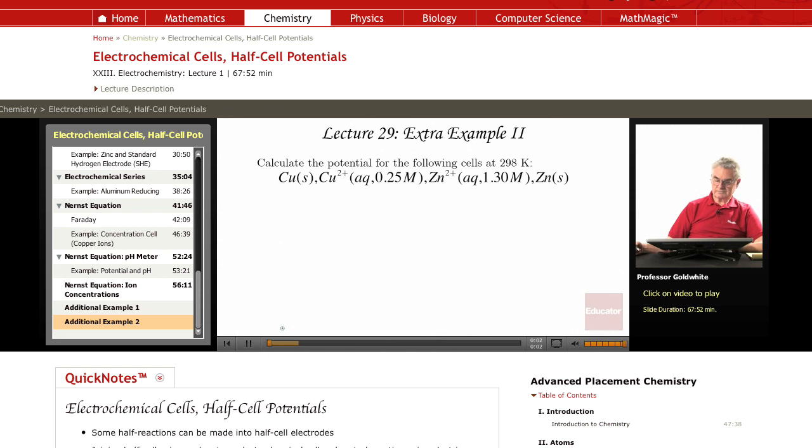Now here we have a cell. By the way, we're only talking about one cell in this case because we have two electrodes, so one cell. Here we have a cell which is under non-standard conditions. We see that right away. The concentrations are non-standard.